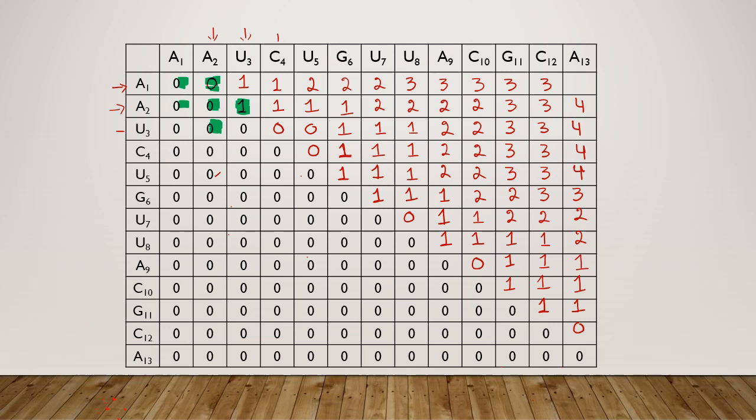After filling the matrix, we proceed to the traceback step. In the traceback step, we start with the highest number, which is in the upper-left area of the upper triangle — the highest score of 4. We then move along towards the lower scores in the matrix.